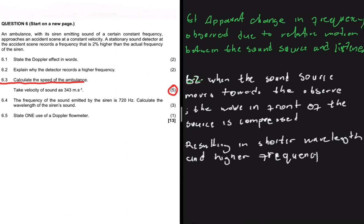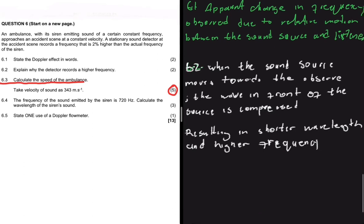The question asks what makes the observer detect a higher frequency when the sound source moves towards them. The answer is: when the sound source moves towards the observer, the wave in front of the source is compressed, resulting in a shorter wavelength and higher frequency. That is the answer for 6.2.